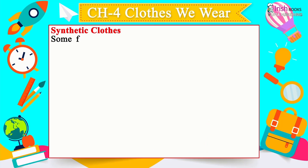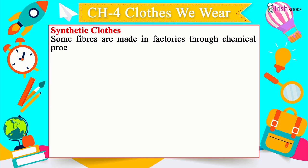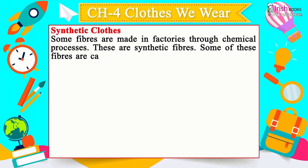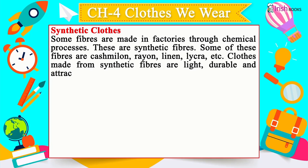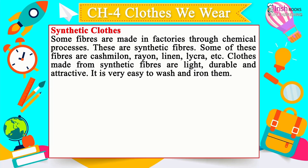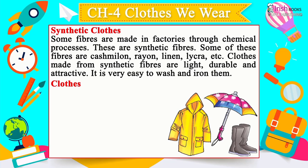Synthetic Clothes: Some fibres are made in factories through chemical processes — these are synthetic fibres, such as cashmere, rayon, linen, lycra, etc. Clothes made from synthetic fibres are light, durable and attractive, and very easy to wash and iron.